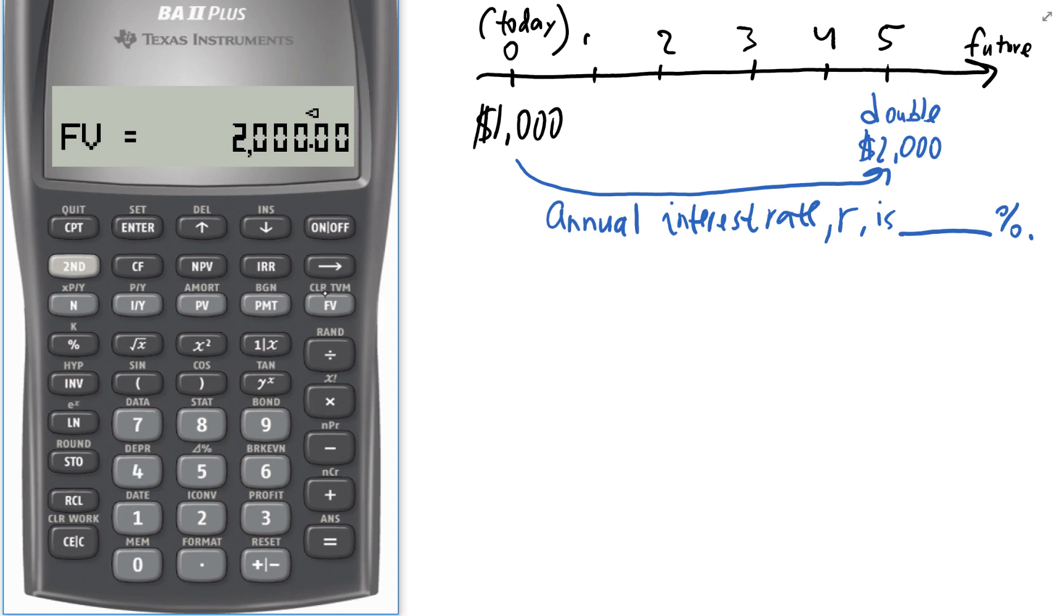Then they are five years apart. So I press five, that's my number of years, that's between PV and FV. And I save it as N.